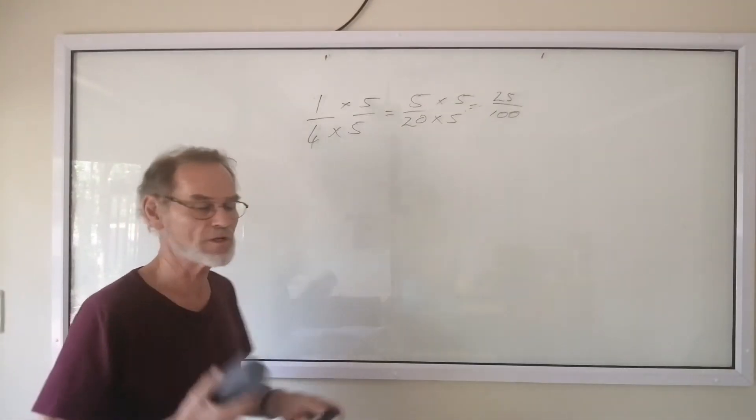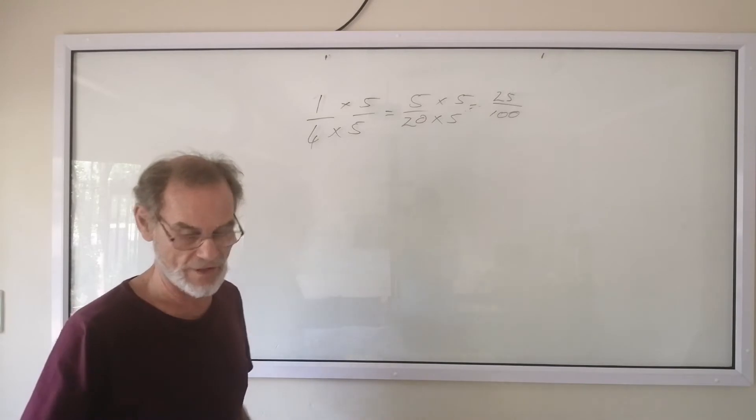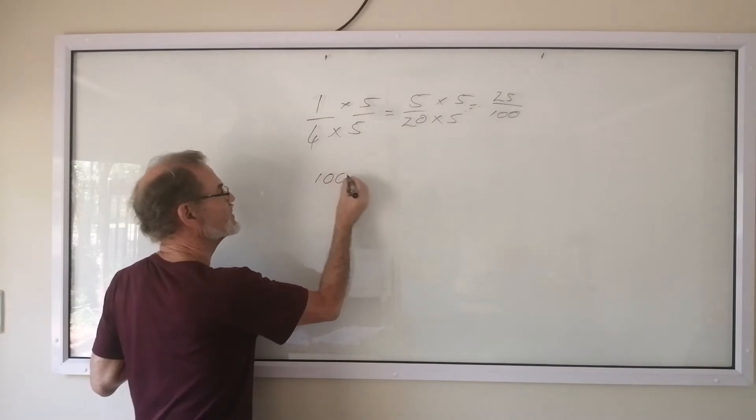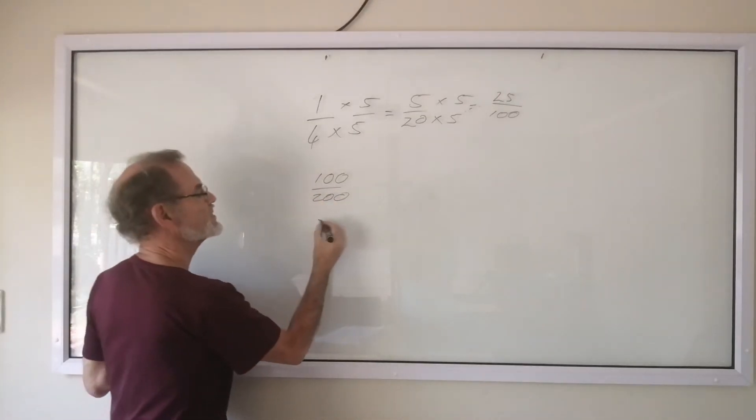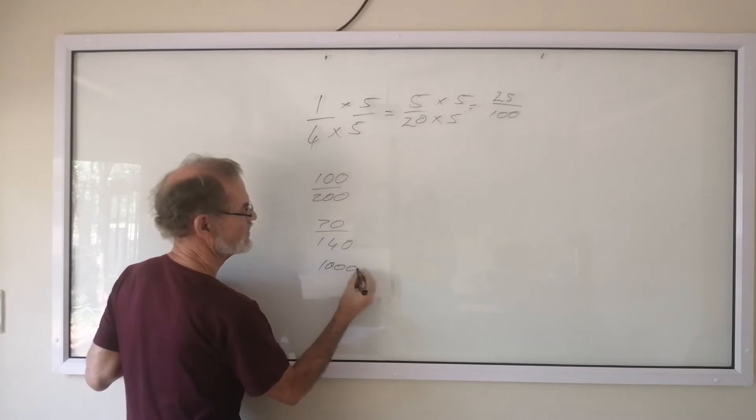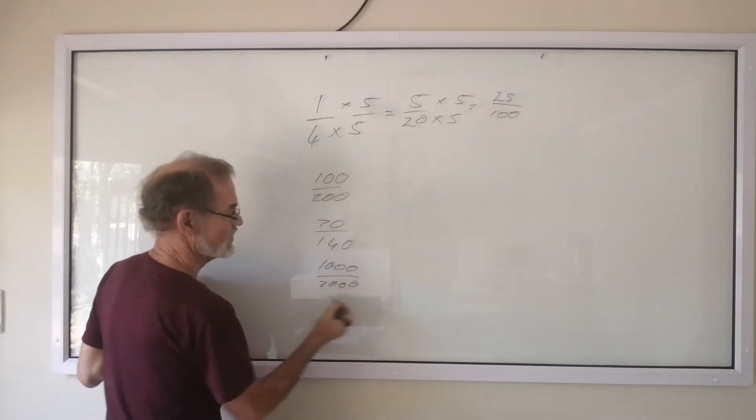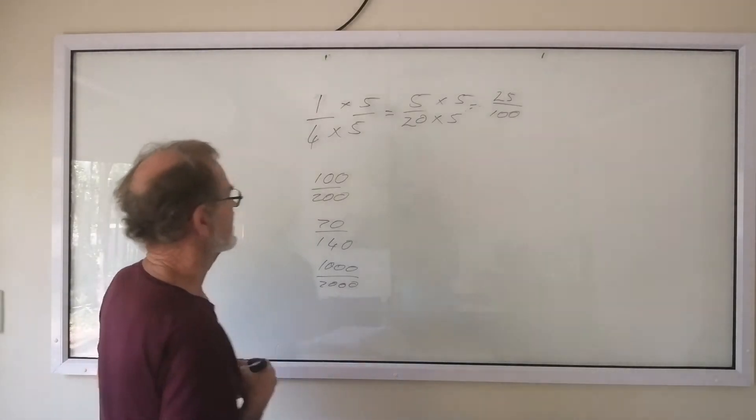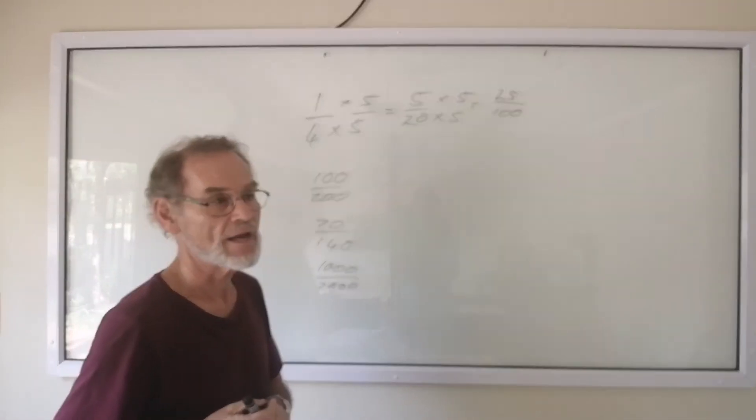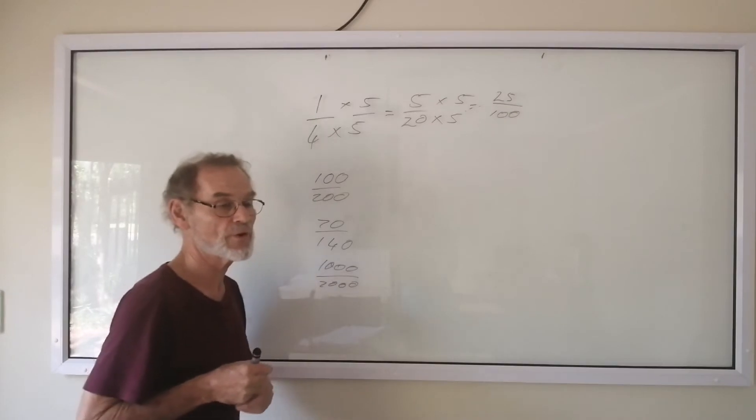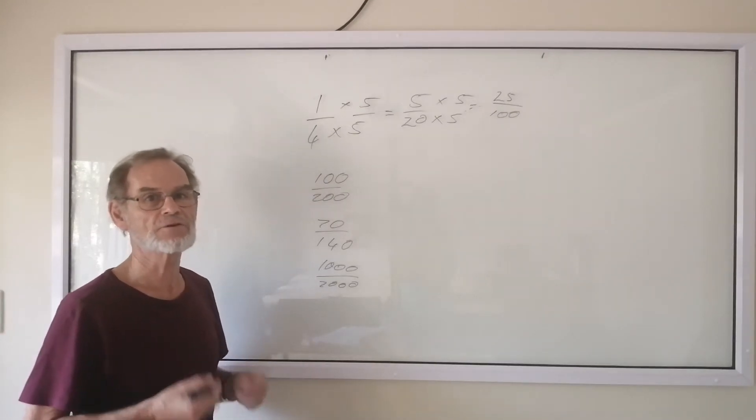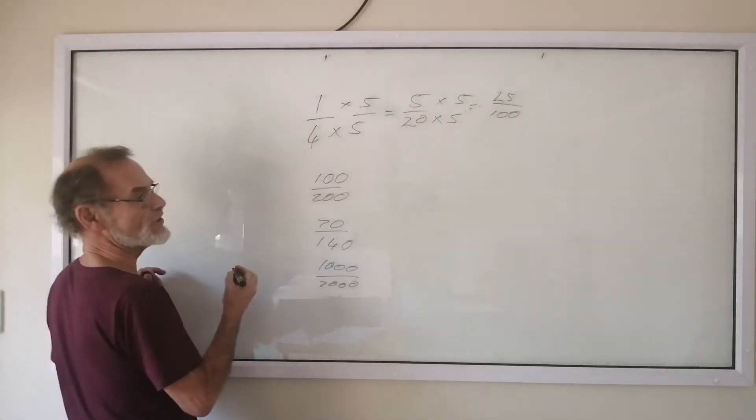So we can form equivalent fractions by multiplication. We can also form equivalent fractions by division. Let us say we've got a fraction of 100/200, or a fraction of 70/140, or a fraction of 1000/2000. Are these equivalent fractions? Well, we need to divide by the highest common factor. And if you can't see the highest common factor, we will excuse you by using not the highest common factor, but it just means you will have to divide again until you can't divide anymore. But these are very easy to see.